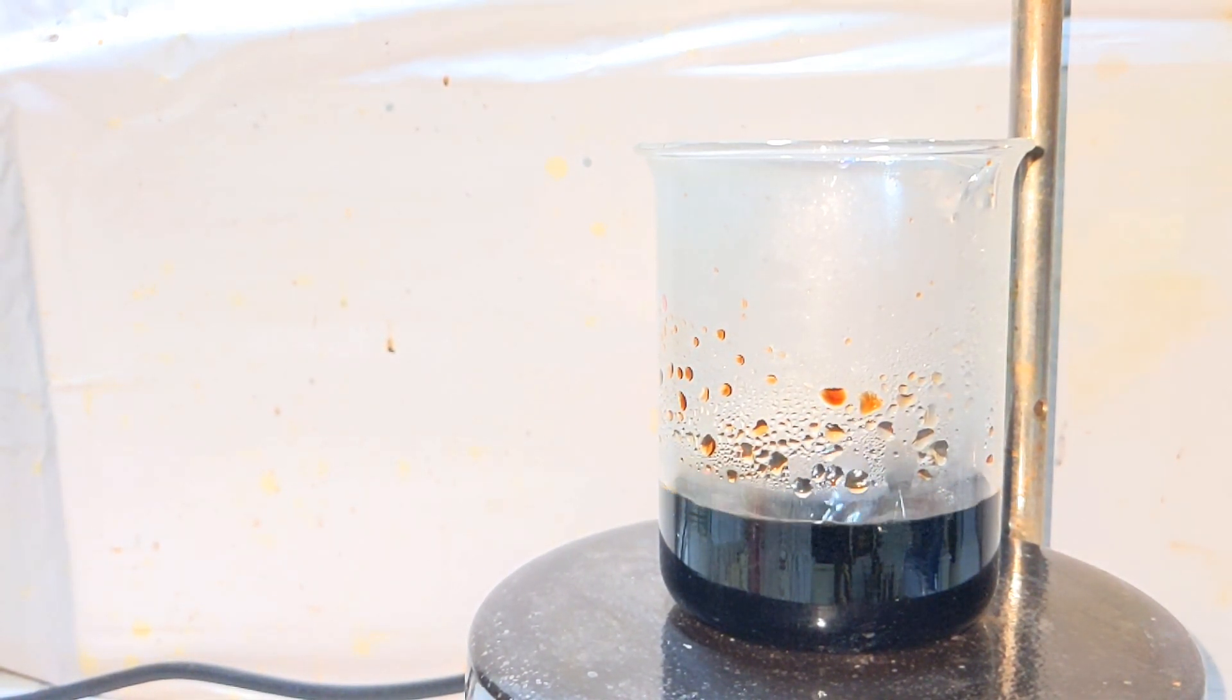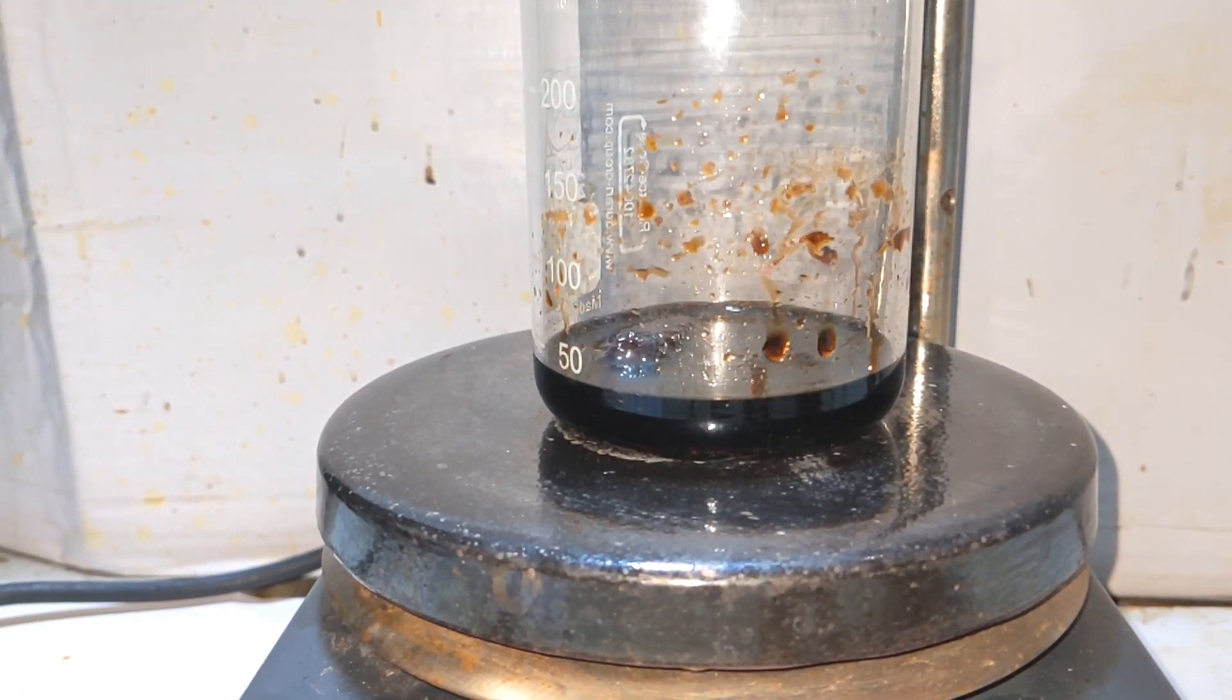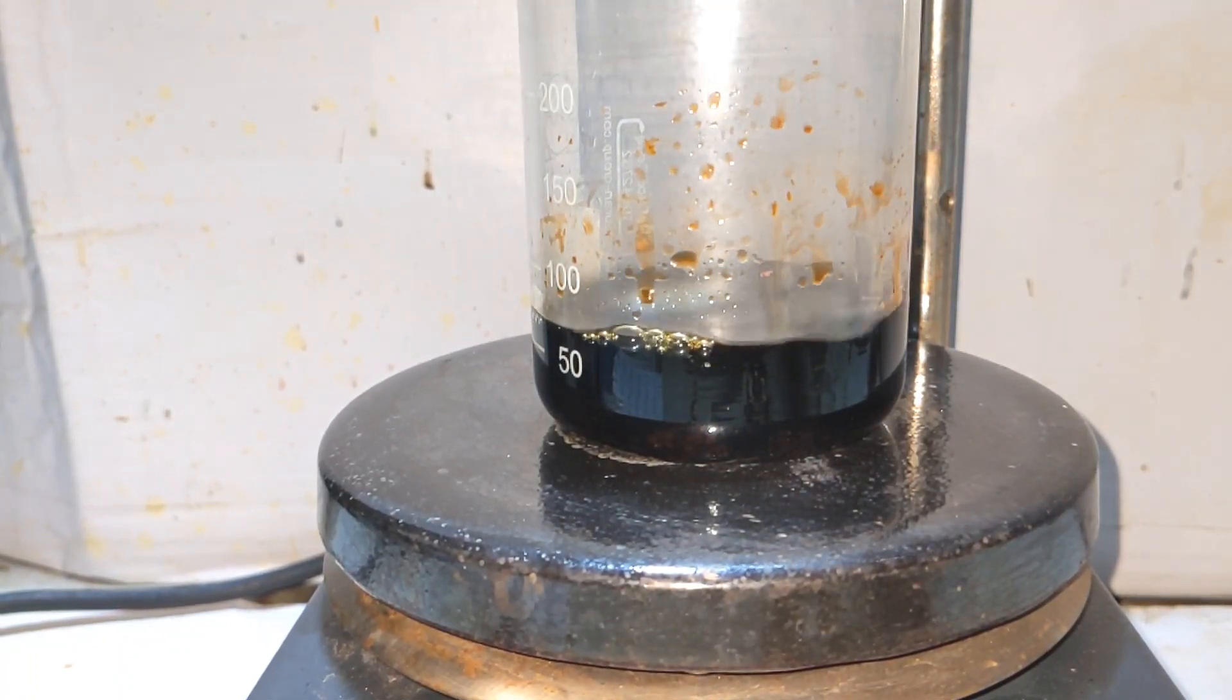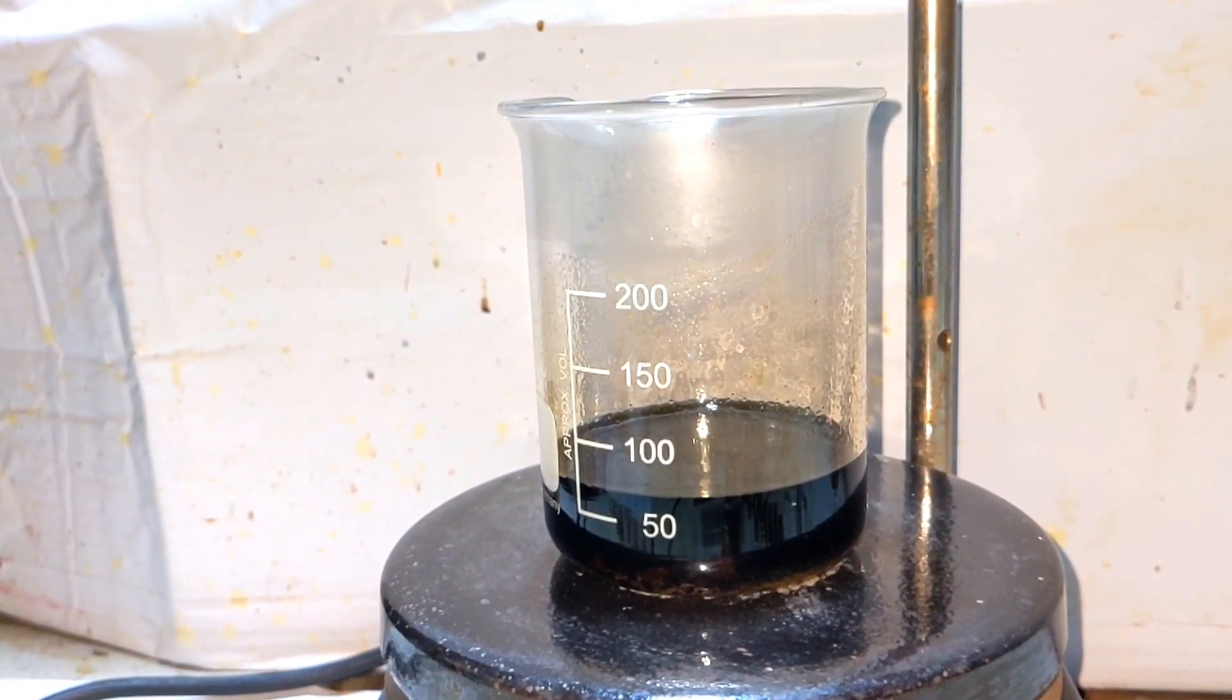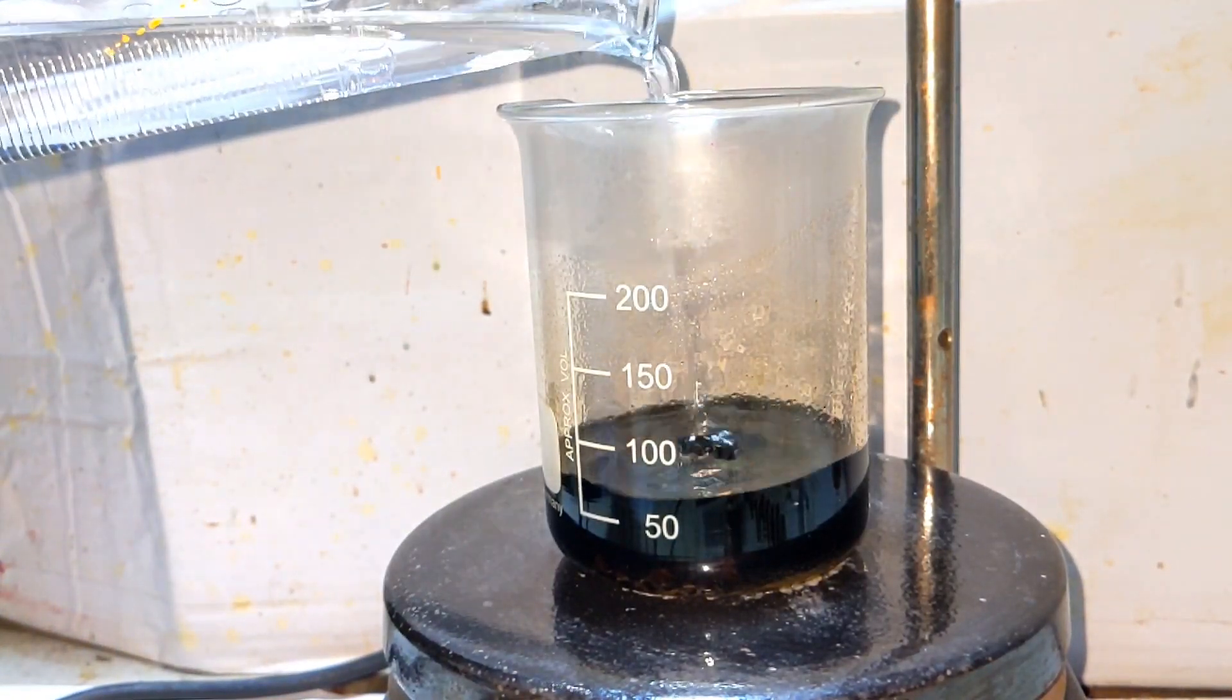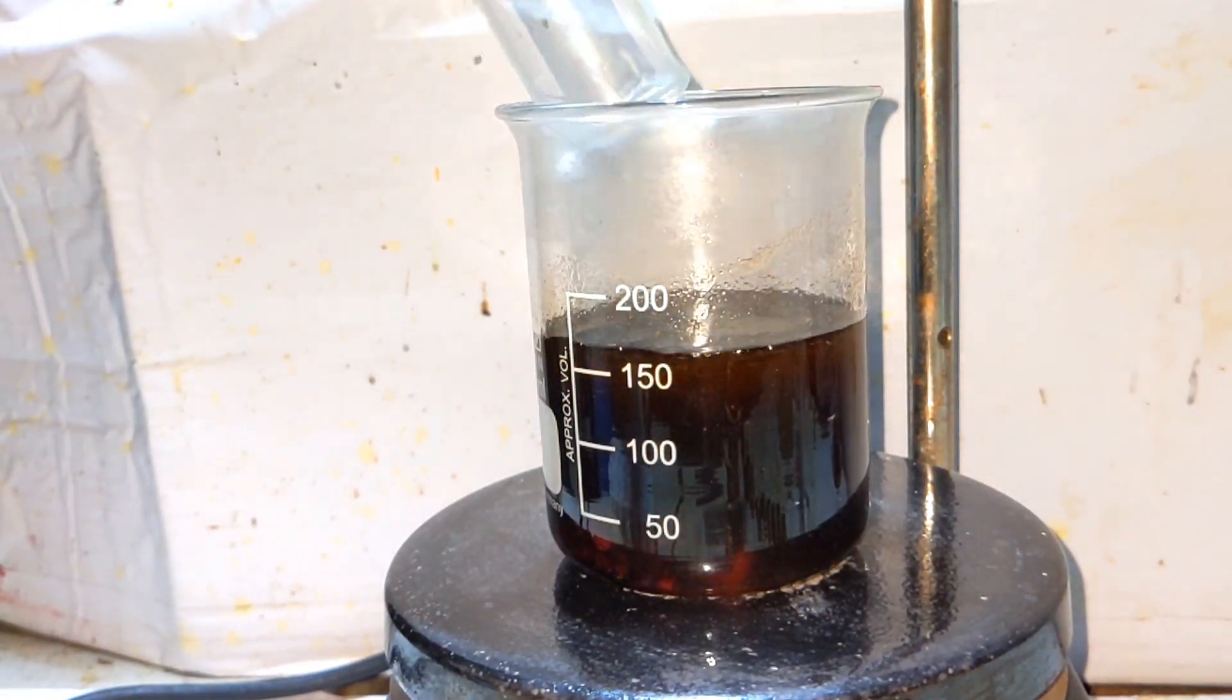After cooling down to room temperature, 50 milliliters, almost double the volume, of 37% hydrochloric acid was added. Then add 100 milliliters of 96% ethyl alcohol.